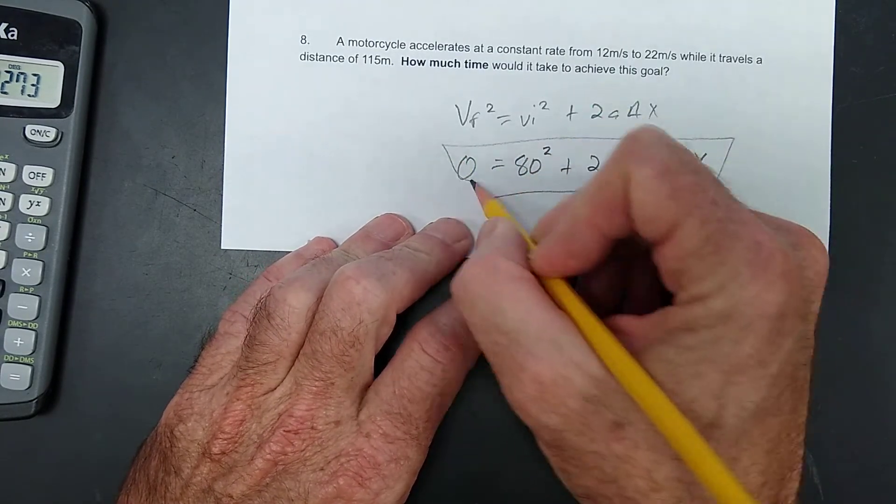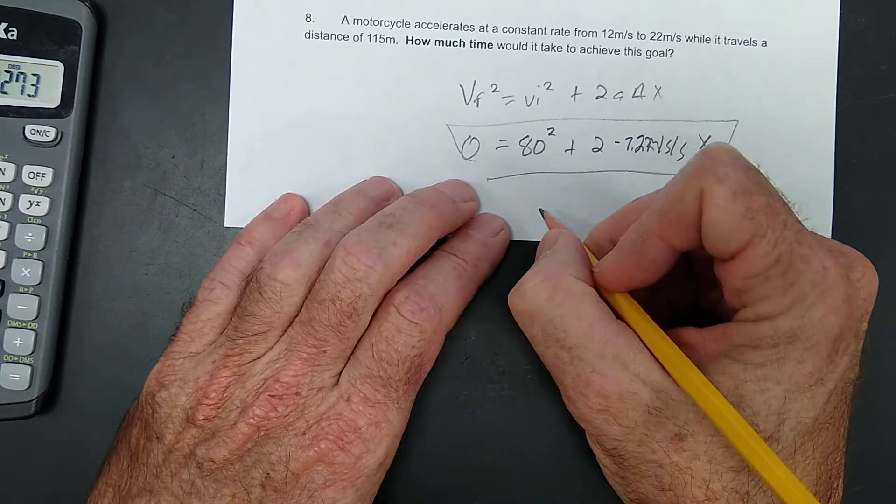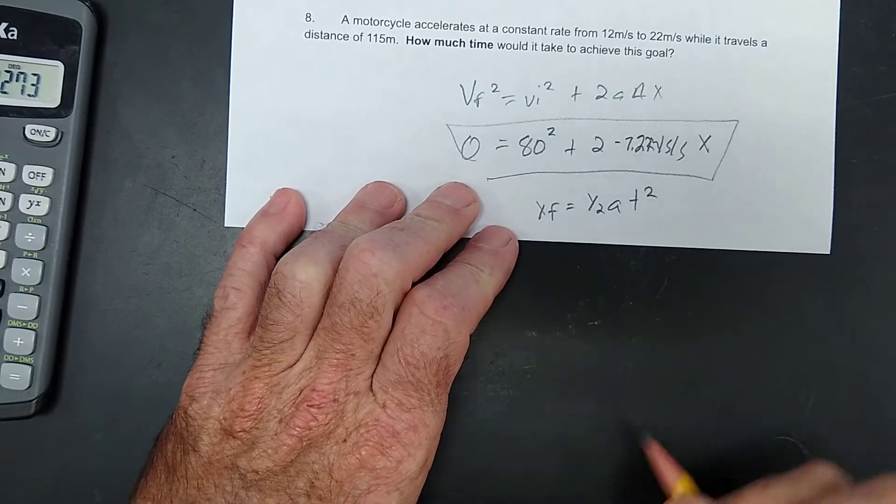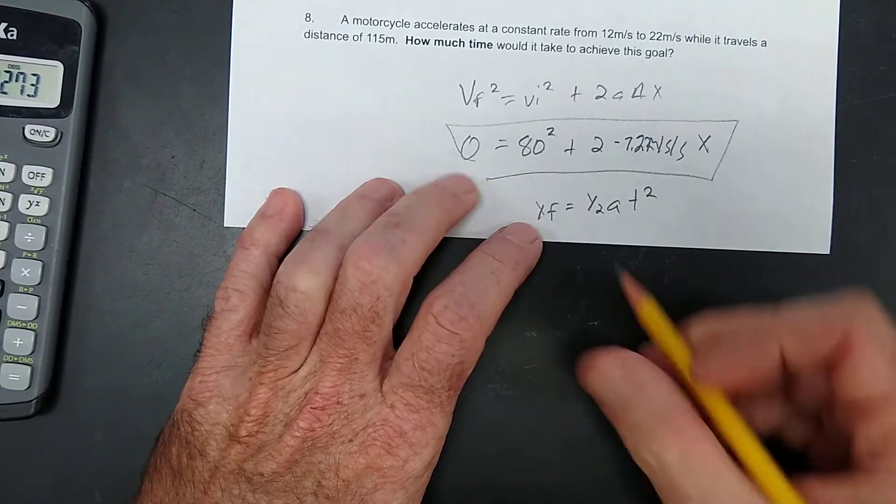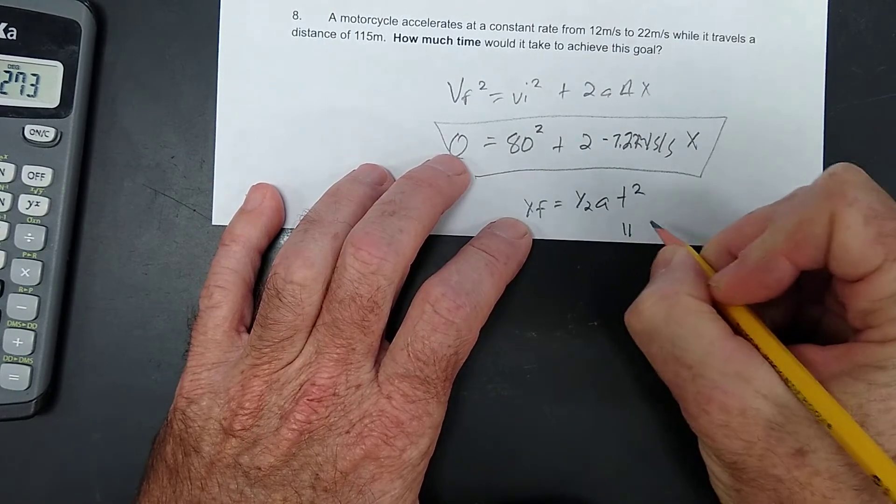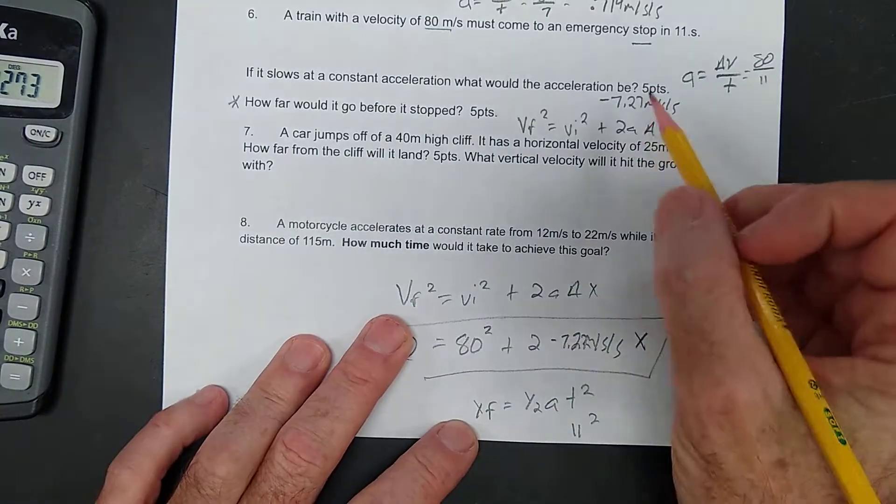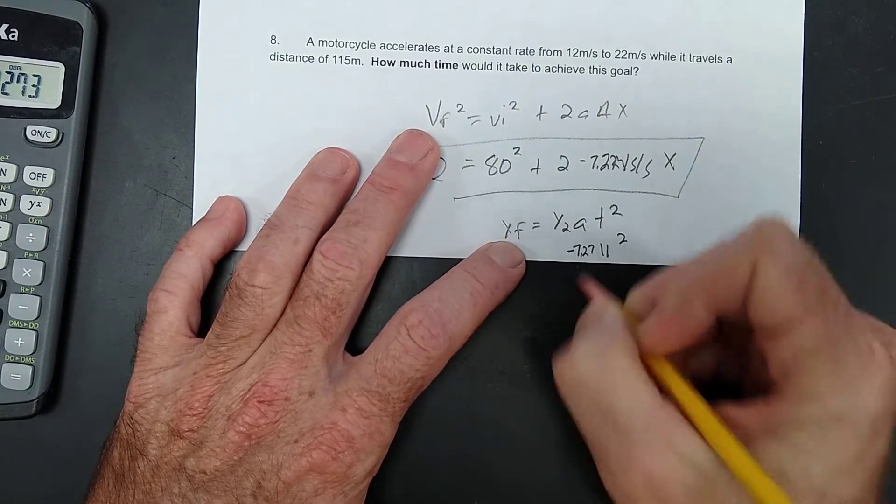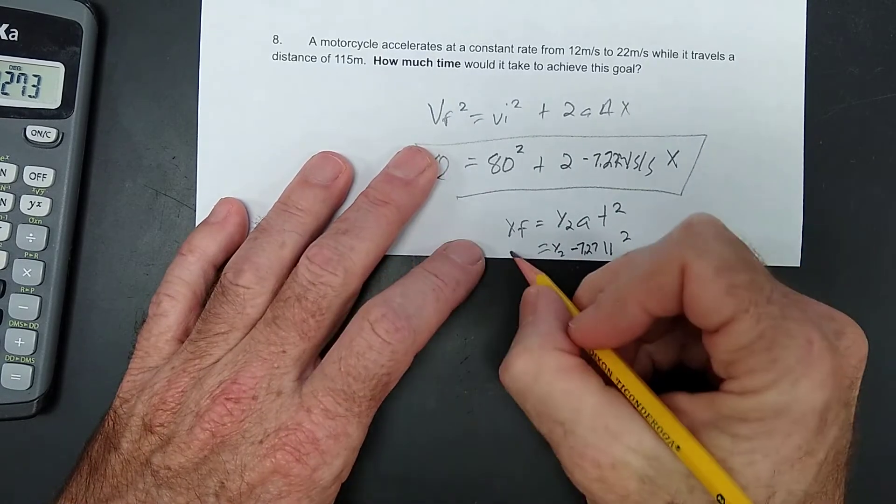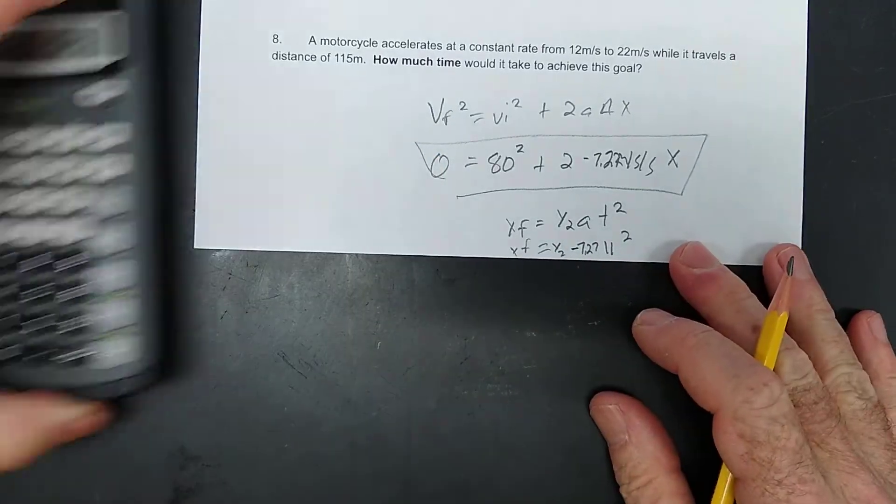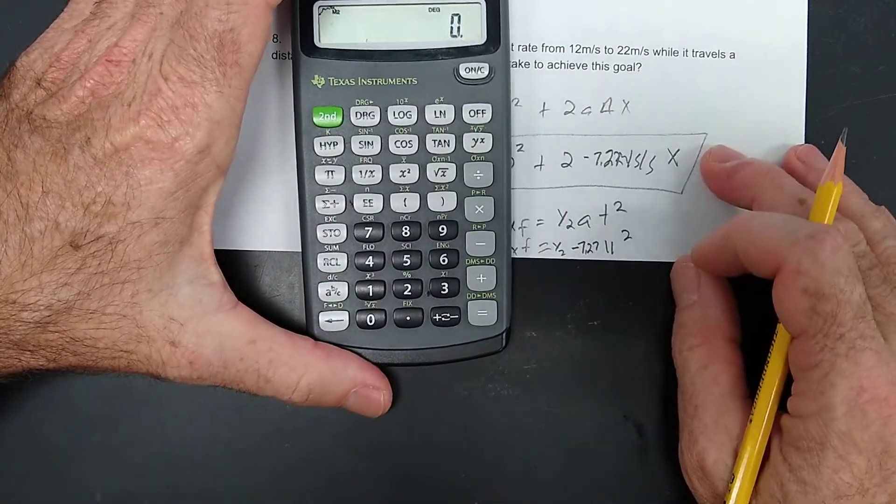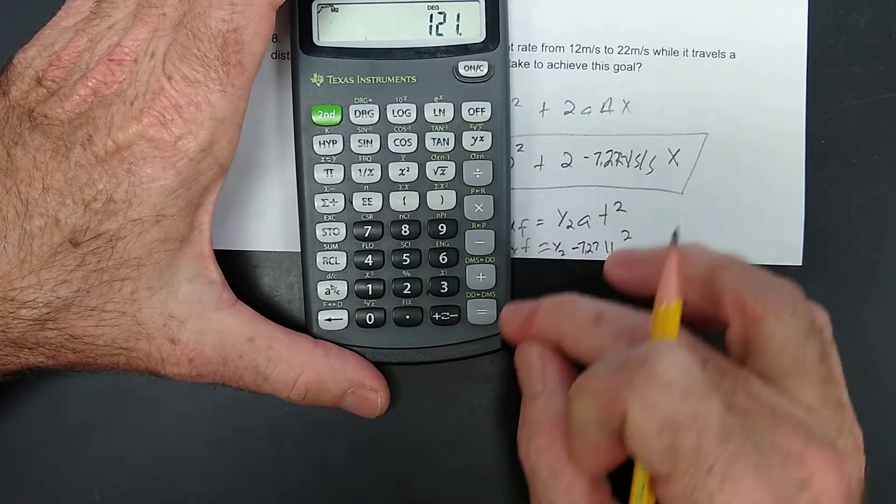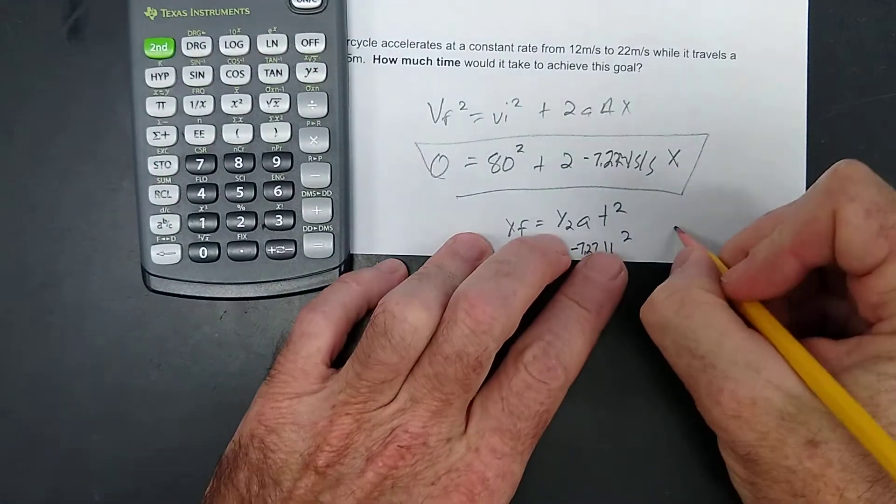Okay? Now, you can use this formula or you could just use XF equals one-half AT squared. That would be really simple too, wouldn't it? The time was 11 seconds, 11 squared. Its acceleration, remember, was negative 7.27. So, one-half of that will give you how far it took to stop. So, either one of those will work. Okay? I'll give you the number real quick. 0.5 times 7.27 times 11 squared equals about 440 meters.